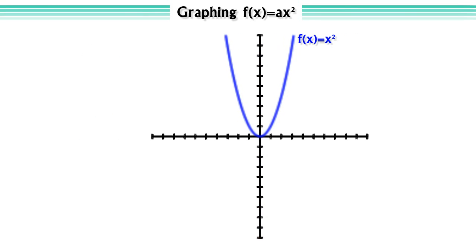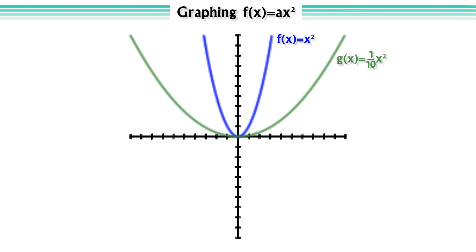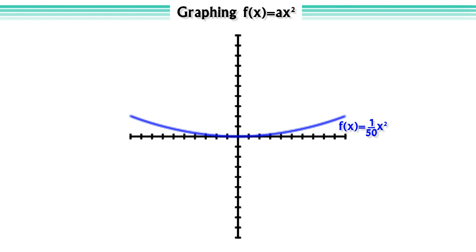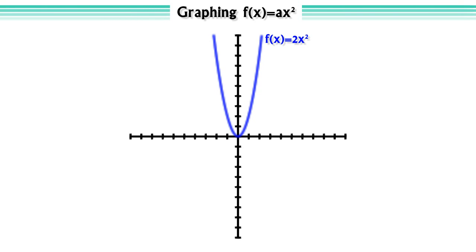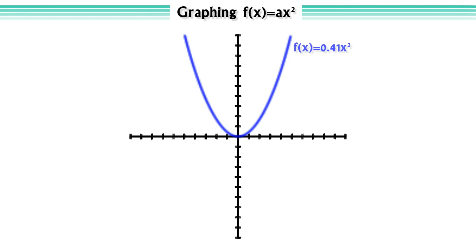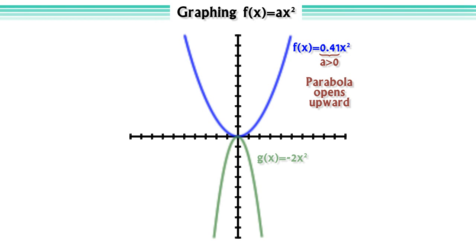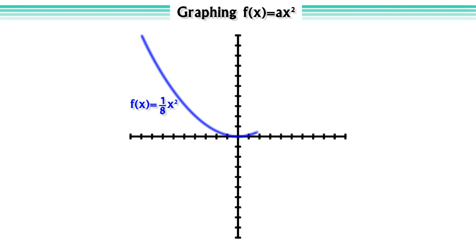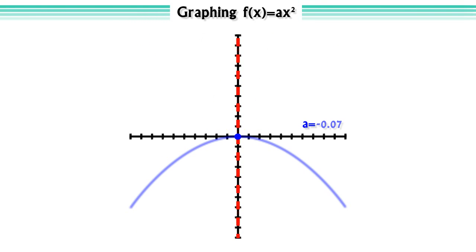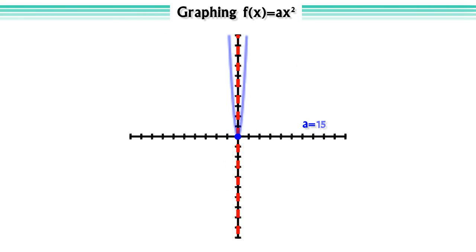Let's compare it to the graph of the function g(x) = (1/10)x². Notice that this parabola is wider than the parabola for x². In fact, the closer to zero the x² coefficient a becomes, the wider the parabola will be. Similarly, the larger the absolute value of a becomes, the narrower the parabola will be. If this coefficient is positive, the parabola will open upward. If this coefficient is negative, the parabola will open downward. Changing the sign of a reflects the function over the x-axis. Note that changing this coefficient does not affect the position of the vertex or the axis of symmetry of the parabola.